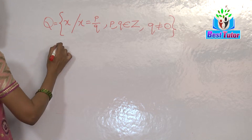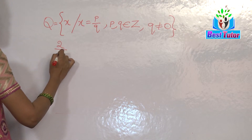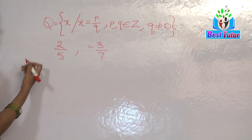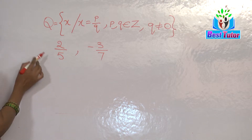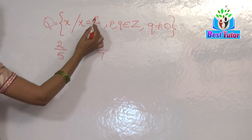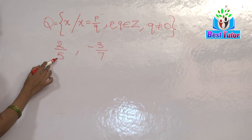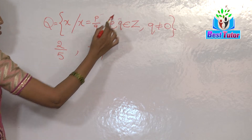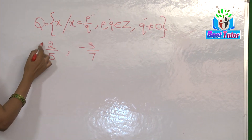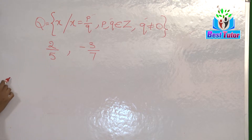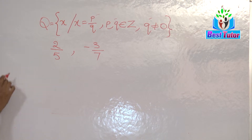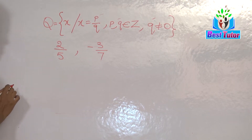Now, how do we compare two rational numbers? I have written two examples of rational numbers here. Two by five is a rational number because it satisfies all three conditions: it can be written in the form of a fraction, both the numerator and denominator are integers, and the denominator is never equal to zero. All three conditions are satisfied, so this is a rational number. Similarly, minus three by seven is also a rational number. Now how do I compare these two rational numbers?